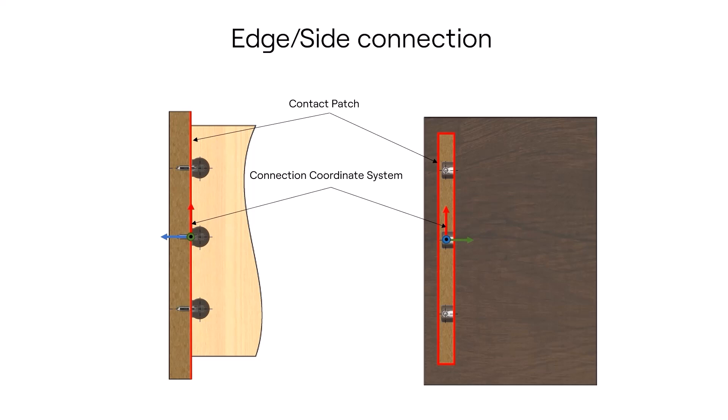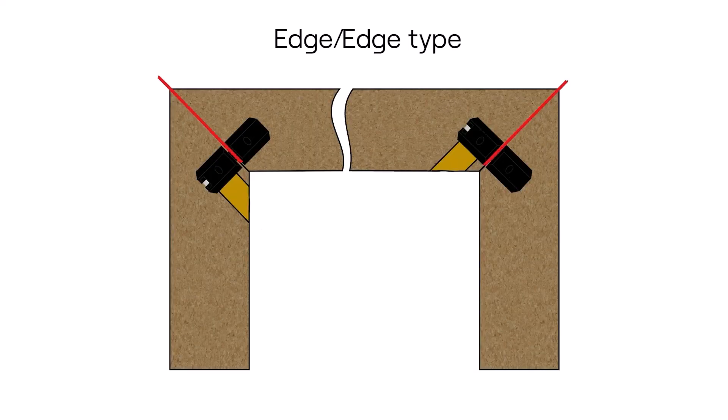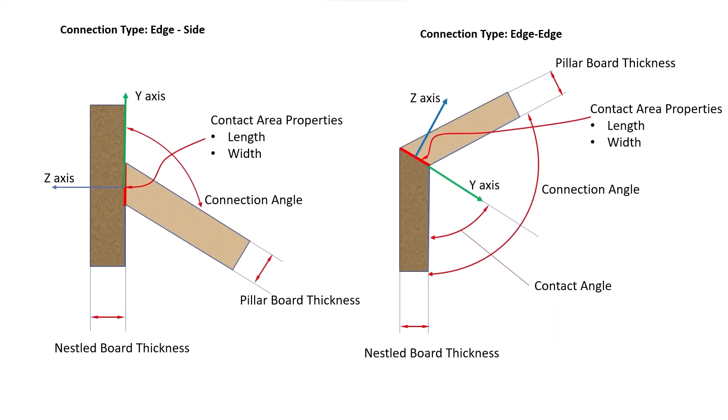Panels may not only be connected by the edge-side type, but also by the edge-edge type, where two panels are in contact with their end surfaces. This results in a joint, but the mathematics remains the same. The surfaces are in contact, and there is a contact area, which we can also match with the coordinate system and assume that the Z axis is pointing away from the contact surface.